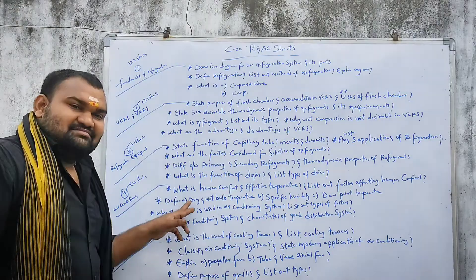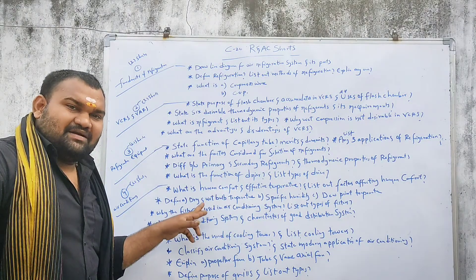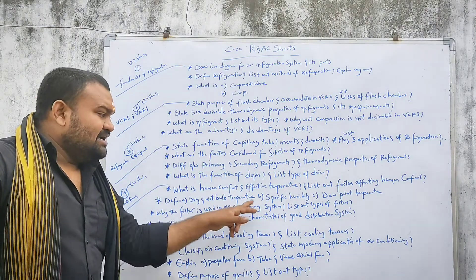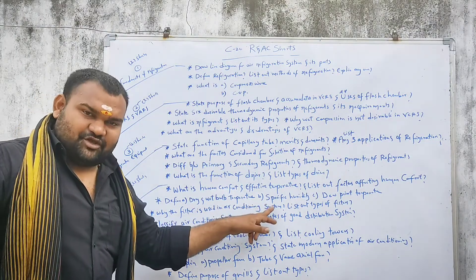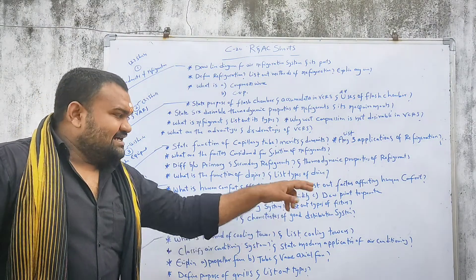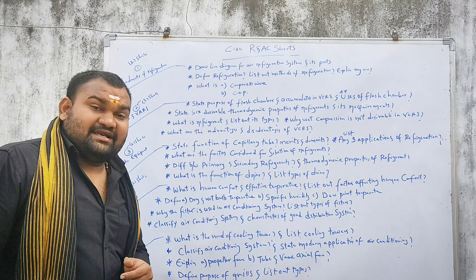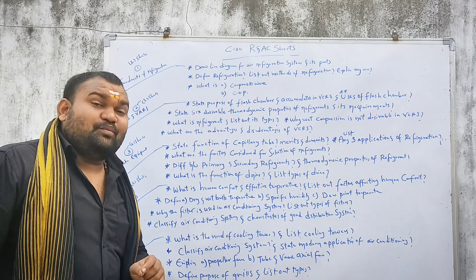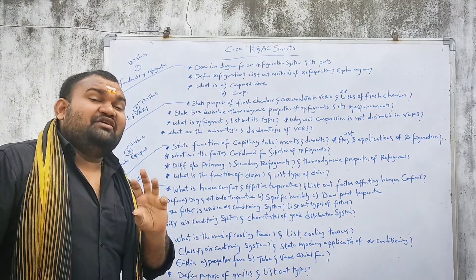Define: A) dry bulb temperature and wet bulb temperature, B) specific humidity, C) dew point temperature, and D) humidification.